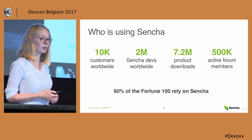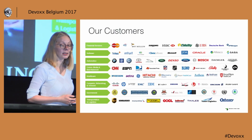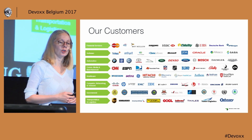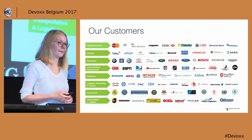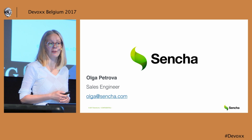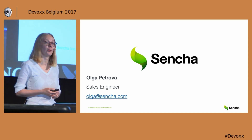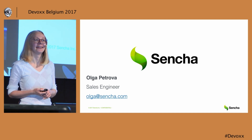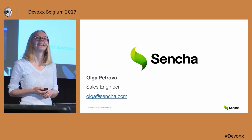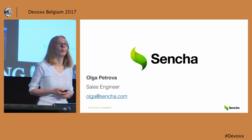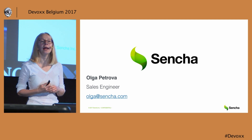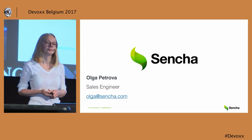At the end, I would like to show you some of our customers to give an impression of what kind of companies are using Sencha to build their enterprise applications. I was quite fast, so I have two and a half minutes for questions. Regarding Angular: we have released a preview release called ext.angular — it's available as a preview release, not production yet, and it is also commercialized.